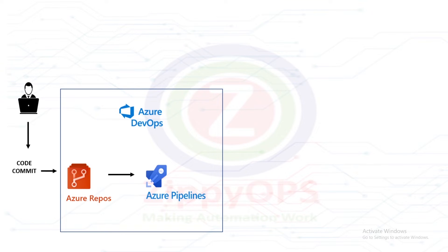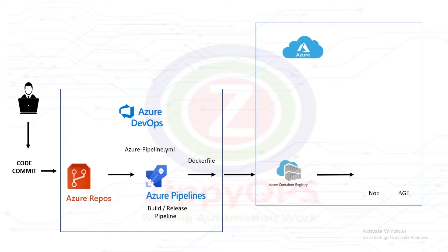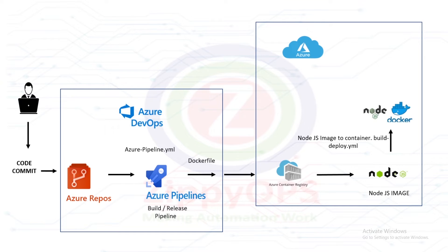In the next stage, the Azure Pipeline creates a Docker image with NodeJS application code artifacts, tags the image, and pushes it to Azure Container Registry. In the final stage, the Azure Pipeline executes the commands which deploy the pod by pulling the latest image from Azure Container Registry into Azure Kubernetes Services.